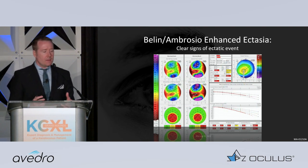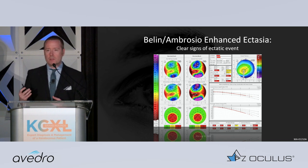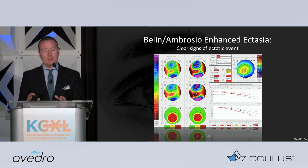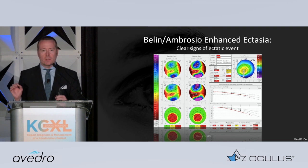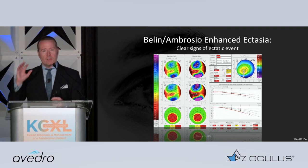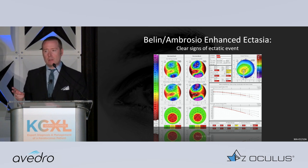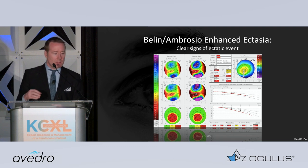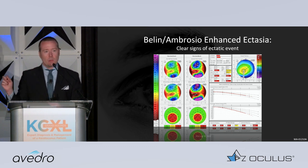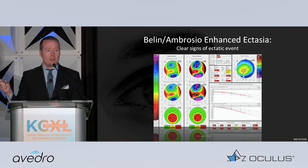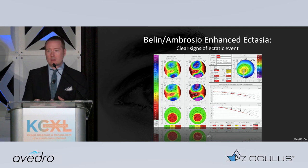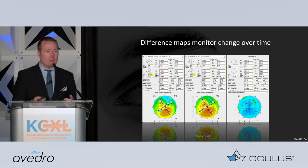If we look at the Belin-Ambrosio enhanced ectasia screening tool — as Ron taught us — this takes a number of indices and we pay attention to two primary ones. The easiest way to think about it: if you see a yellow flag, that's one standard deviation outside a normative database; if you see a red flag, that's two standard deviations. In the bottom right corner is the BAD-D, which is the summary of all the sub-indices. If that's flagged yellow, that's one standard deviation outside a normal cornea; if it's red, it's two standard deviations — that's what we really want to be paying attention to.